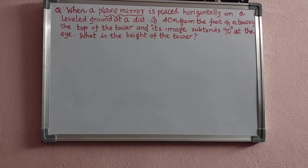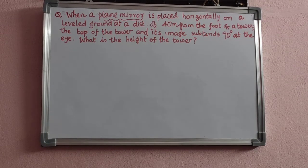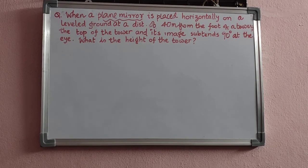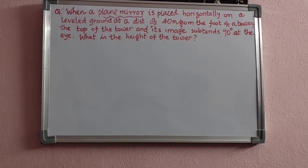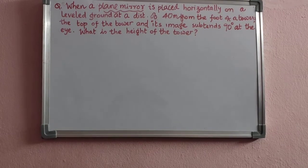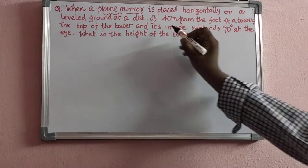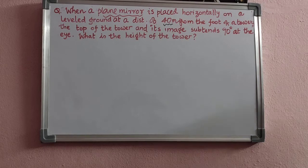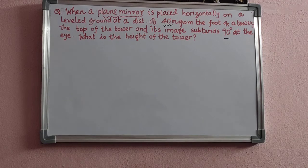In this question, a plane mirror is placed horizontally on a leveled ground at a distance of 40 meters from the foot of a tower. The top of the tower and its image subtend 90 degrees at the eye. We have to find the height of the tower. The important points are: we are using a plane mirror, it is placed horizontally, it is 40 meters from the foot of the tower, and the angle subtended is 90 degrees.